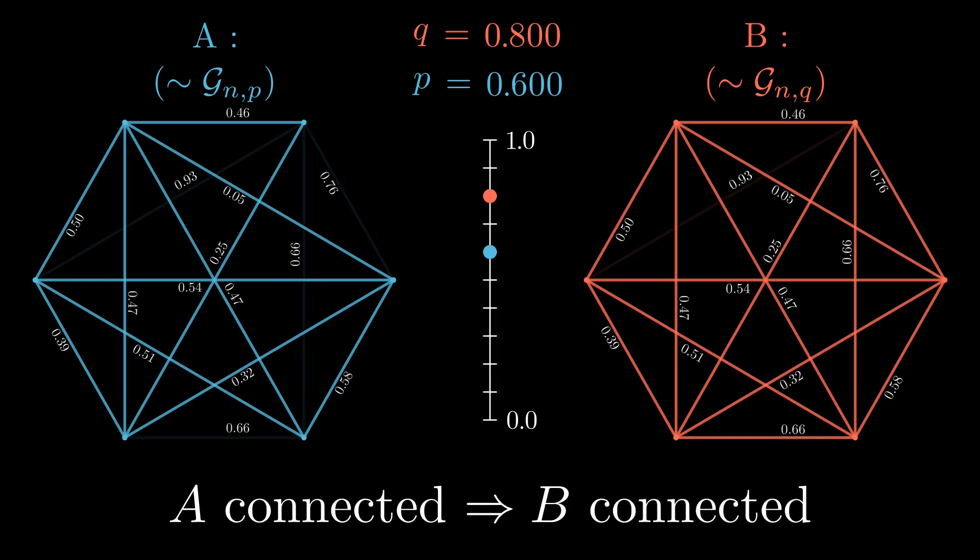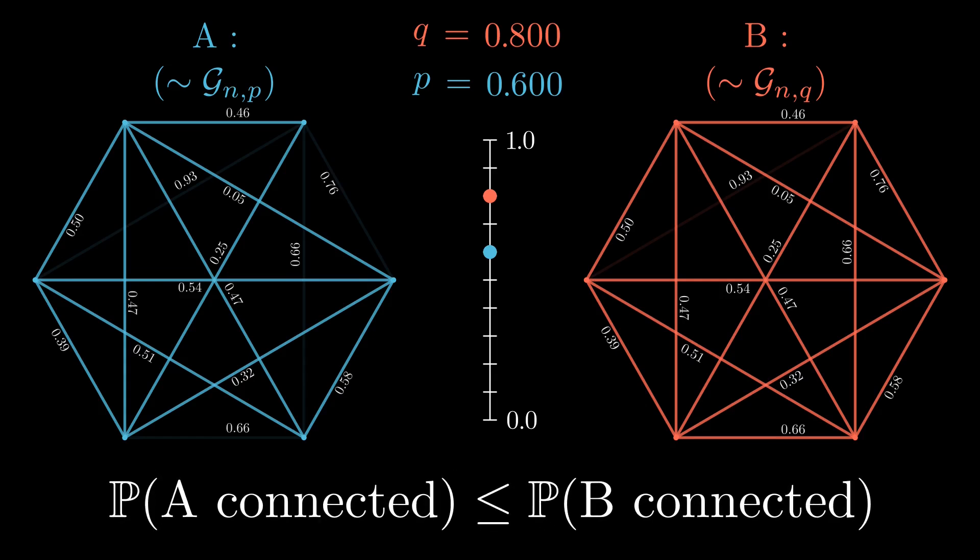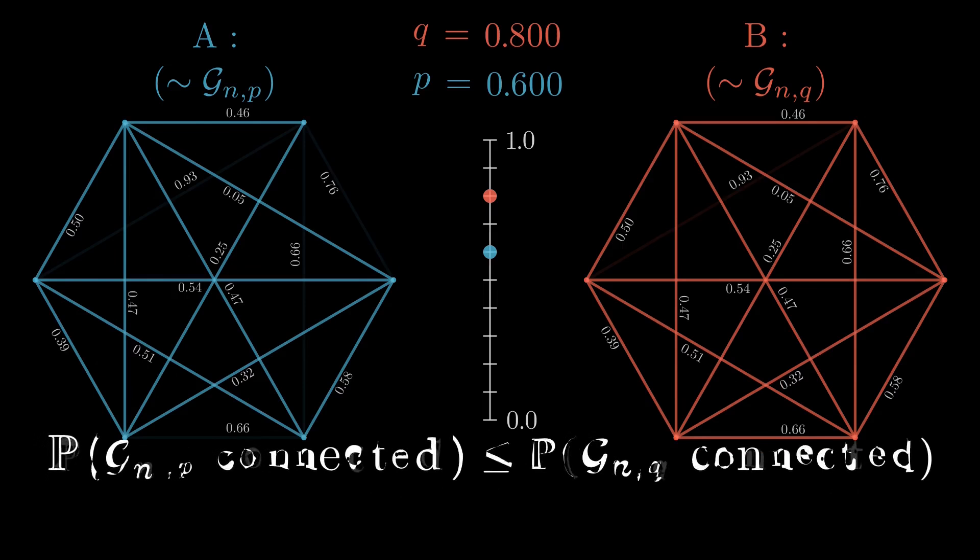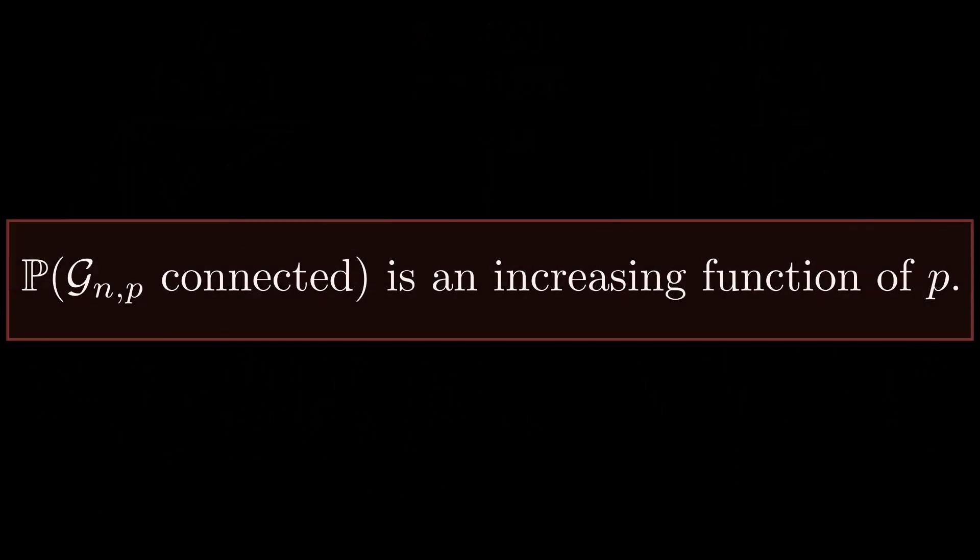Upon taking the probability of these events, we get this. And since A follows the same probability law as G_{n,p}, and similarly for B and G_{n,q}, it becomes this. Of course, this was under the assumption that p is less than q. So, we are done. So, there you have it. A full proof of this fact using coupling.